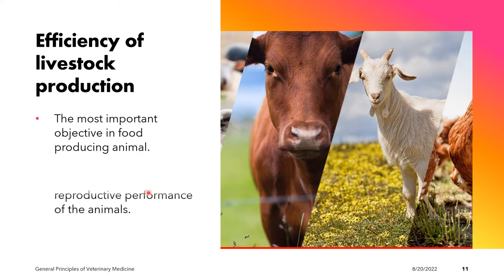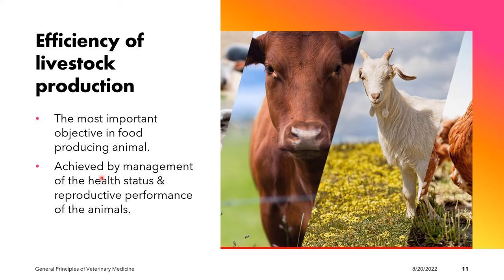Livestock production efficiency is largely dependent on two factors: the health status of the animal and the reproductive performance of the animal. We can only achieve efficiency in livestock production if we are successful in managing both the health status and the reproductive performance of the animal.